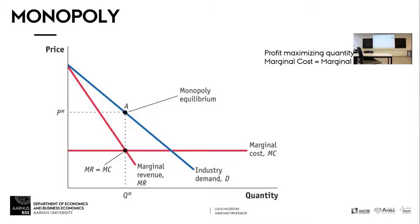We have this linear demand, which is an industry-level demand because you're a monopoly — you're the only one producing. And then here we have the marginal revenue curve.